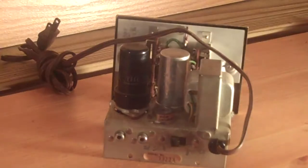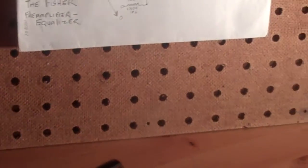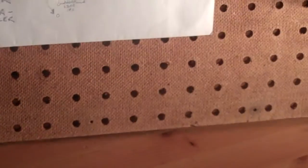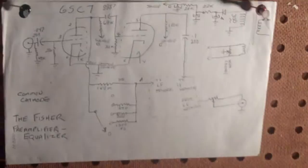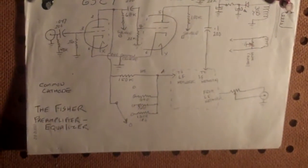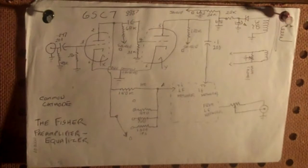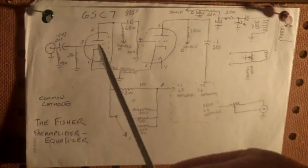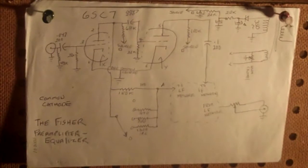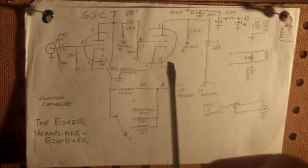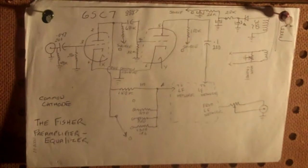Now I drew a little schematic of it because I don't have a schematic. The 6SC7 has a common cathode. Even though it looks like two tubes, it's one tube. But the cathode is common to both triodes.